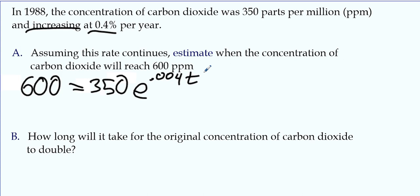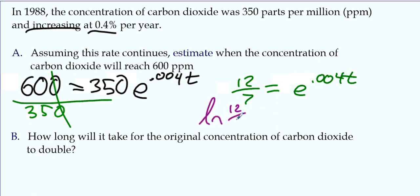We have 0.004 times t. And it's asking when, so we're going to solve for t. So divide by 350. And then 60 over 35 could reduce by 5, so that's 12 over 7. And since the variable is up in the exponent, we're going to log it. Natural log, 12 over 7 equals 0.004 t.